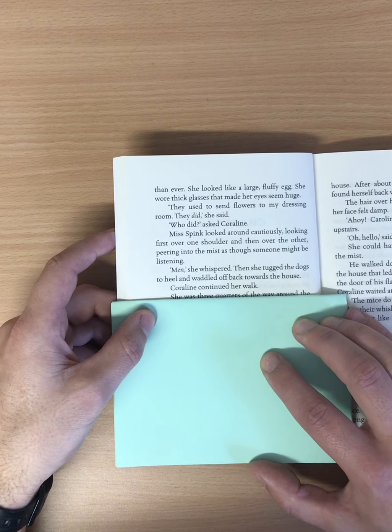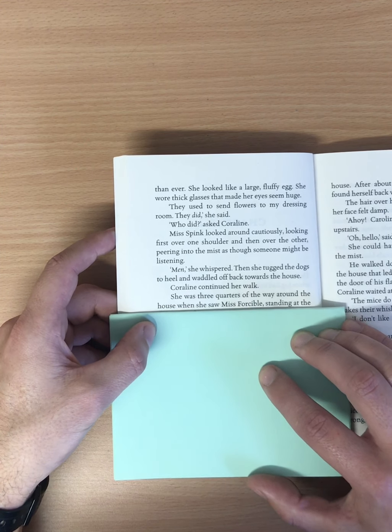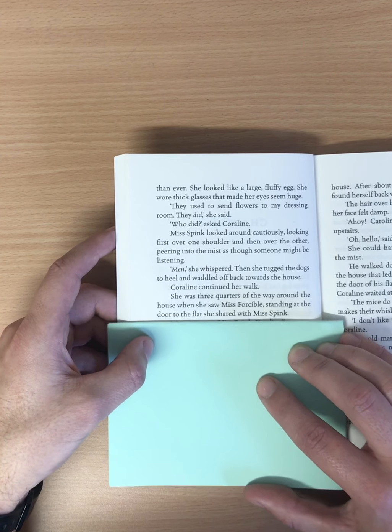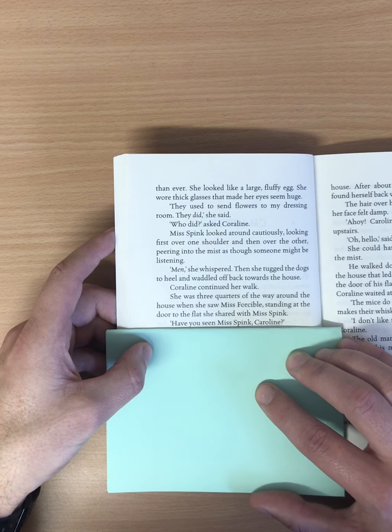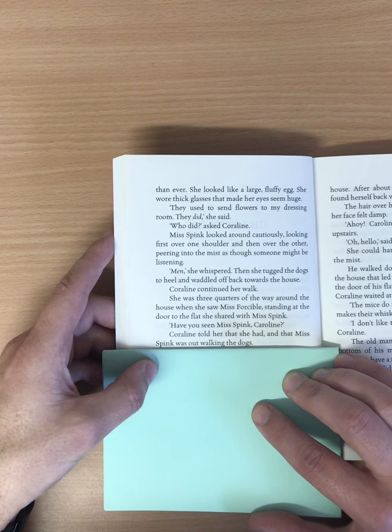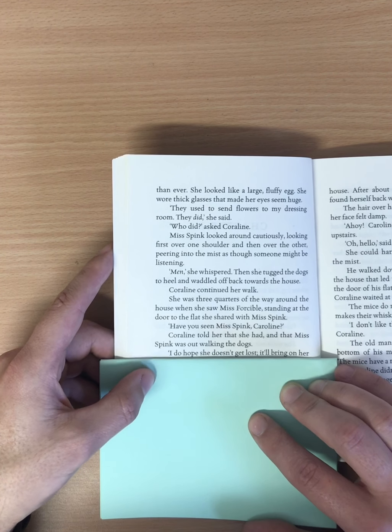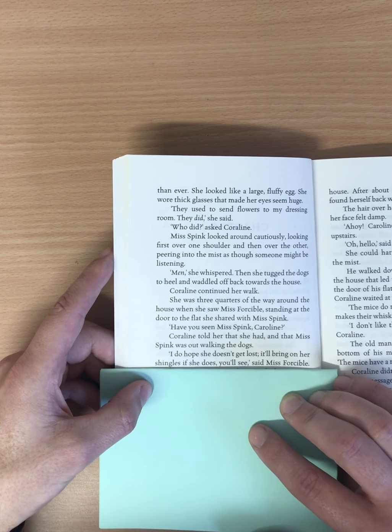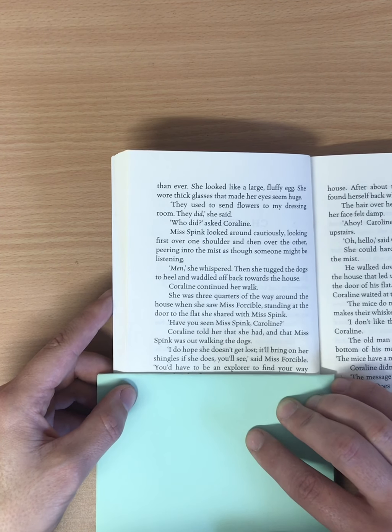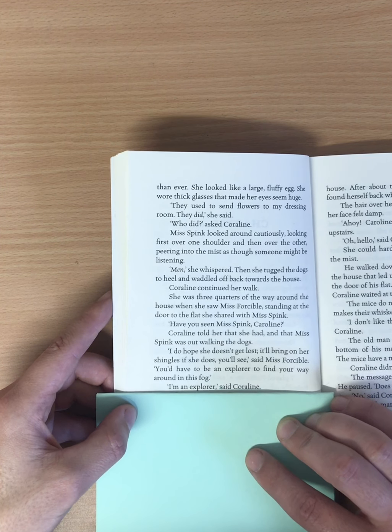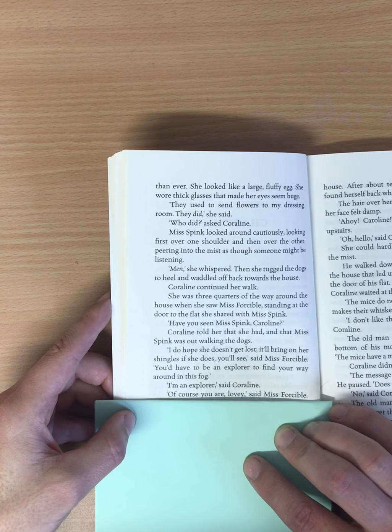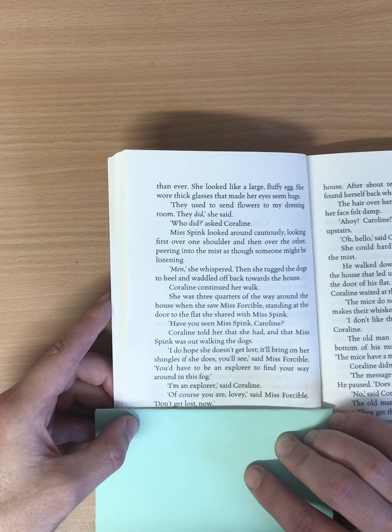Coraline continued her walk. She was three quarters of the way around the house when she saw Miss Forcible standing at the door to the flat she shared with Miss Spink. Have you seen Miss Spink, Caroline? Coraline told her that she had, and that Miss Spink was out walking the dogs. I do hope she doesn't get lost. It'll bring on her shingles if she does. You'd have to be an explorer to find your way around in this fog. I'm an explorer, said Coraline. Of course you are, lovey, said Miss Forcible. Don't get lost now.